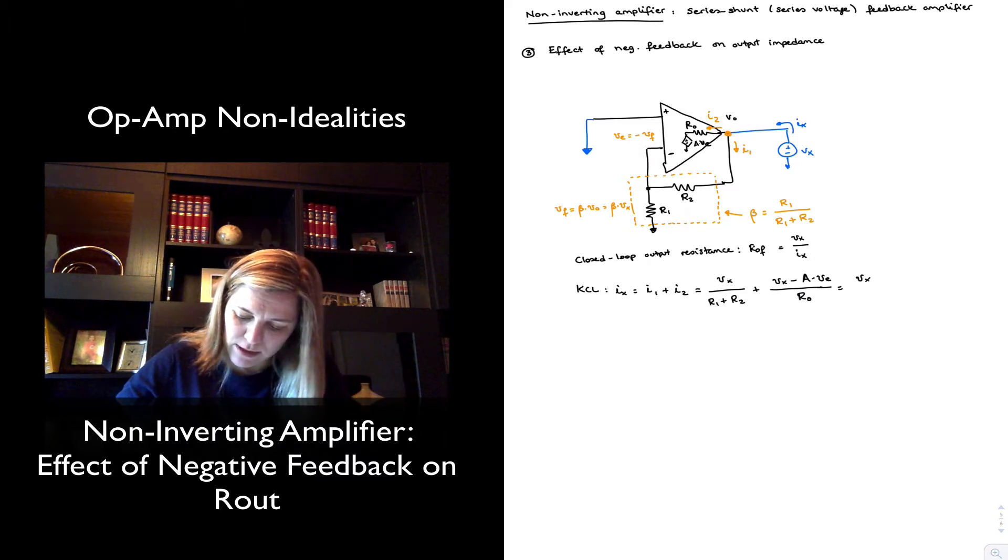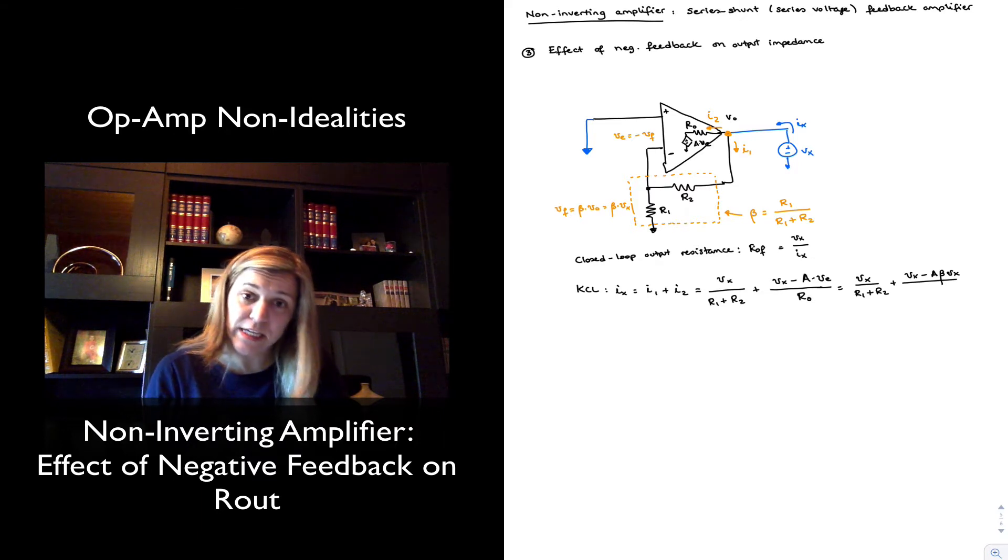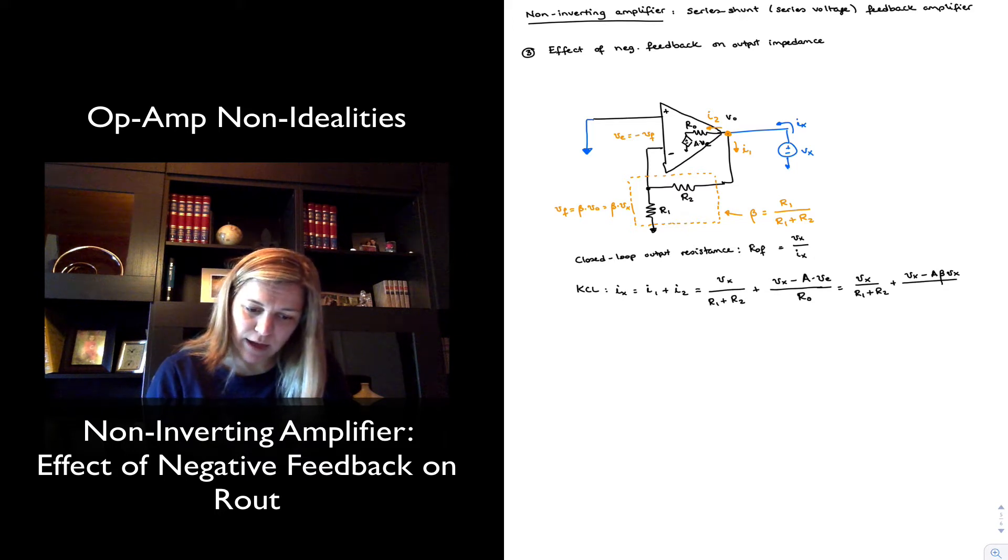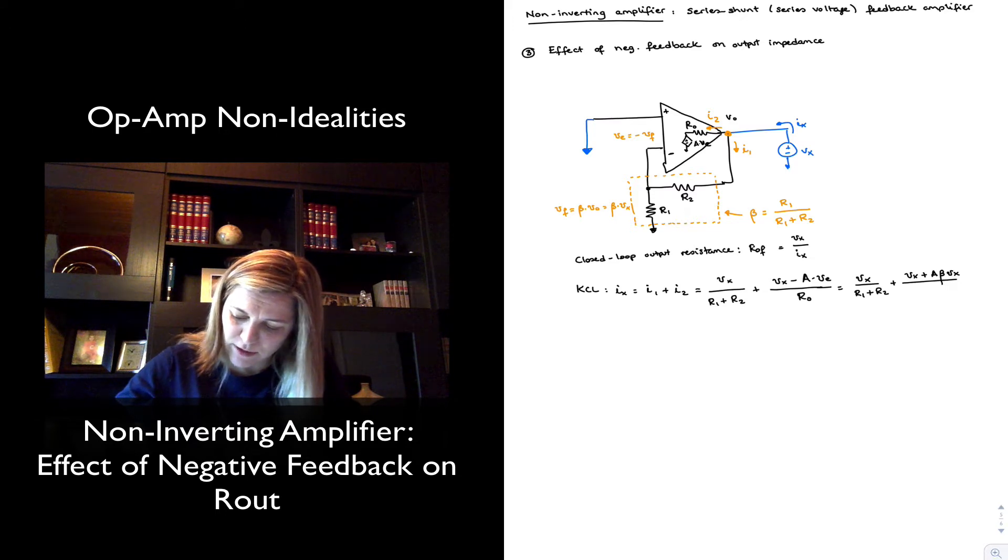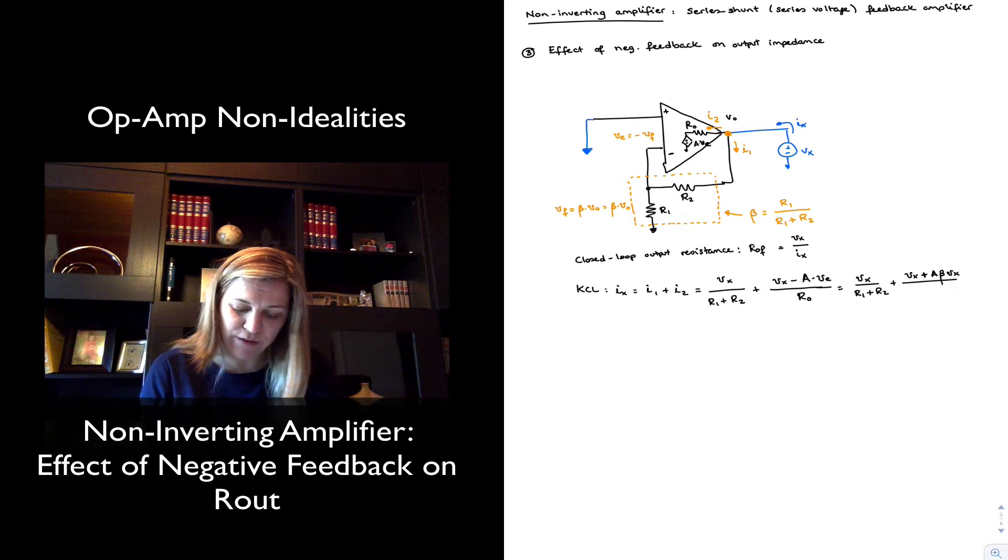And I can rewrite this as Vx over R1 plus R2 plus Vx minus A times beta times Vx. And that's just because VE is a negative Vf, and Vf is equal to beta times Vx. And so actually, negative and negative give me a plus here. That's basically the substitution I've made. VE equals minus Vf and Vf equals beta times Vx, and all that divided by R out.